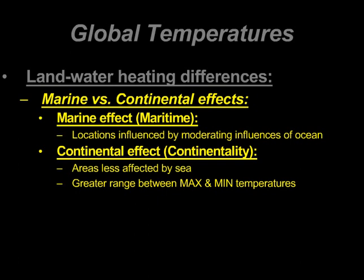Continental places have a greater range between max and min temperatures throughout the year and also throughout the day, with higher highs and lower lows. For example, on June 23rd, Indianapolis had a high of 101°F and a low of 72°F. Meanwhile, Key West, Florida — essentially deep in the middle of the Caribbean Sea — is heavily affected by the maritime effect, with a high of only 83°F and a low of 81°F.